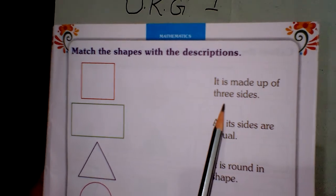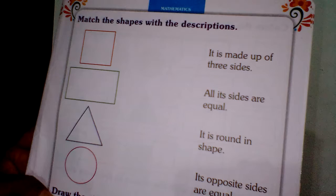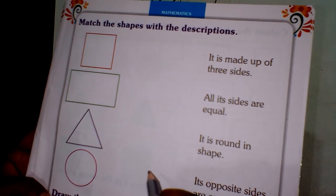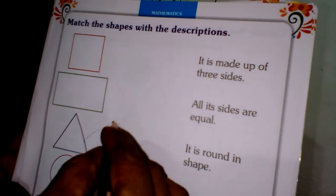It is made up of three sides. This is the triangle. So, draw the line.